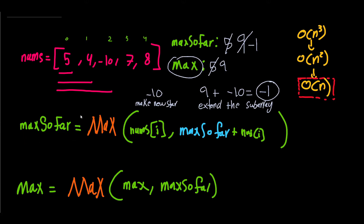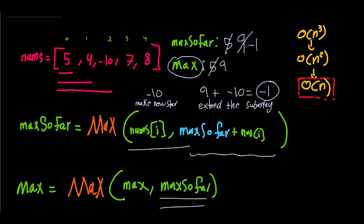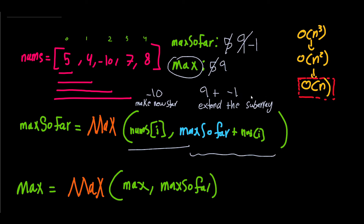At each position, the equation for max_so_far asks: should we make a fresh start and take that number alone, or attach it to max_so_far? We take the maximum of those two options and update max_so_far. Then for max, we take the maximum of the current max and the new max_so_far. Let's continue to the next number, seven.